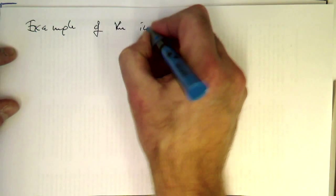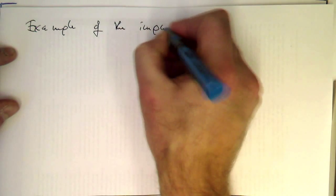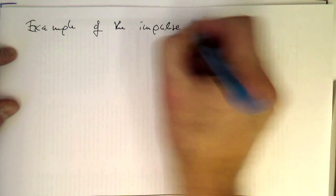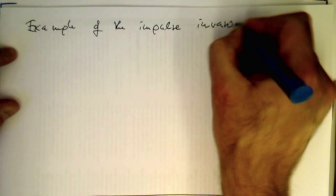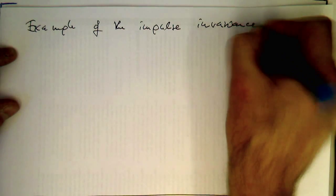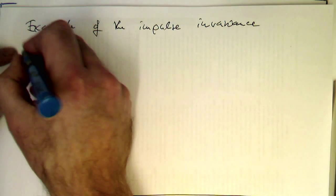After the theoretical derivation, we now do an example of the impulse invariance method.